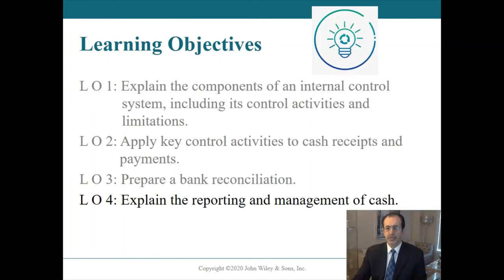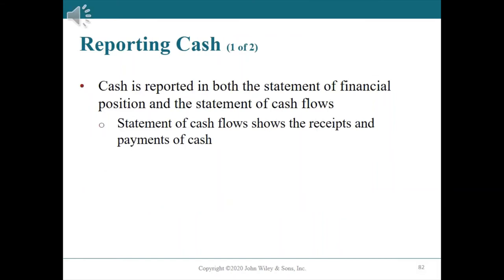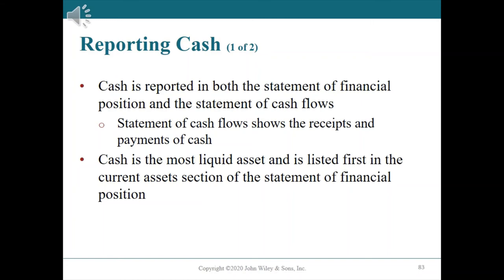Learning objective number four: explain the reporting and management of cash. Reporting cash. Cash is reported in two different financial statements. The statement of financial position reports the amount of cash available at a specific point in time. The statement of cash flows shows the receipts and payments of cash during a period of time. These two statements are linked because the ending cash amount on the statement of cash flows agrees with the cash account on the statement of financial position. Because cash is the most liquid asset, it is listed first in the current asset section of the statement of financial position.